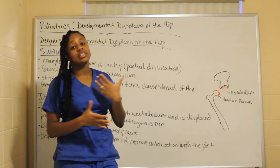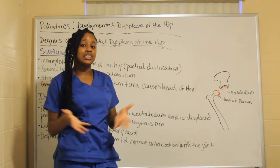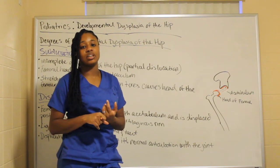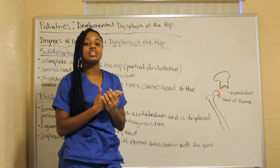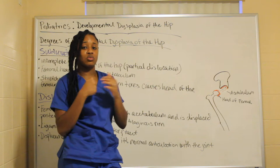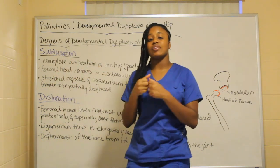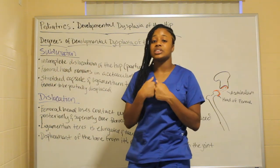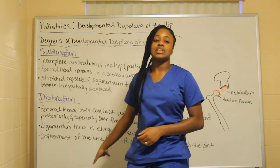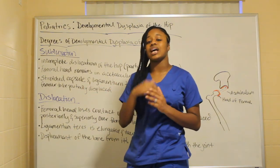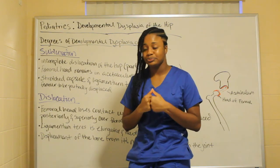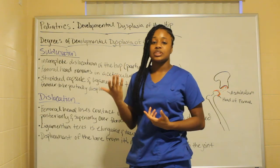When you think of the word dysplasia, think of displacement. The three degrees are: preluxation — acetabular dysplasia, still in the socket but with poor acetabular development; subluxation — elongated ligamentum teres causing improper seating but still connected; and total dislocation — where the acetabulum and head of the femur are completely separated.